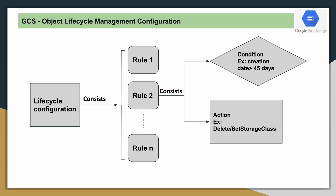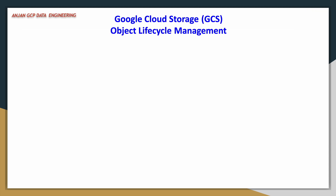While we perform our demo, you can see all those conditions in the Google Cloud Console page. For example, if an object belongs to the previous 45 days and you want to delete it, that delete comes under the action. And also setting the storage class is one more action. Just go to the Google Cloud Storage official documentation — there you can find all the lists of conditions and actions. I think this will help you understand it at a high level, and then we will move on to the demo.